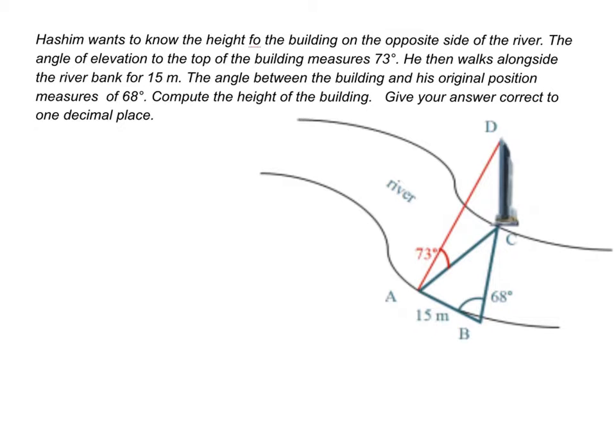We want to find the height of the building, which is CD here. We have the angle here 73 degrees. So we can find out CD if we know the length of AC. Well, we can find out the length of AC from the other triangle, triangle ABC. So we are going to work it out step by step. We are going to first find AC from this triangle.